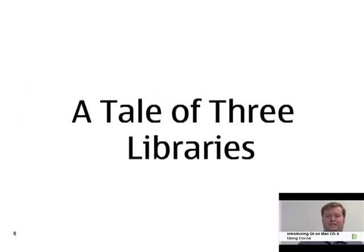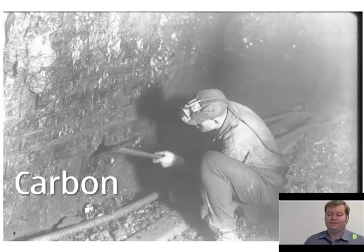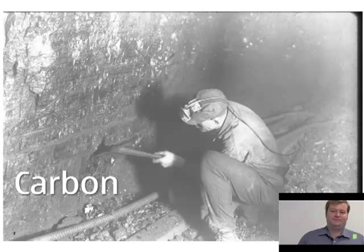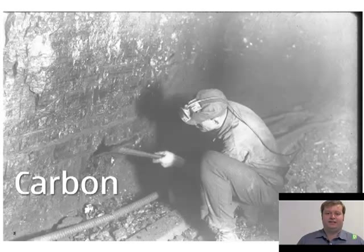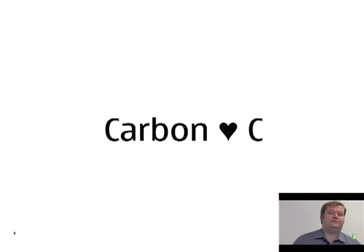I'll try to give you some background first. This is really a story of three libraries. The first library is called Carbon. Carbon is the background of the original toolbox that was used to design Mac applications back in the day before Mac OS X, but it also has a lot of new features as well. Carbon loves C — it's a C-based library.